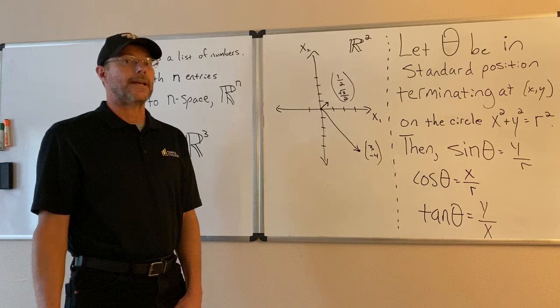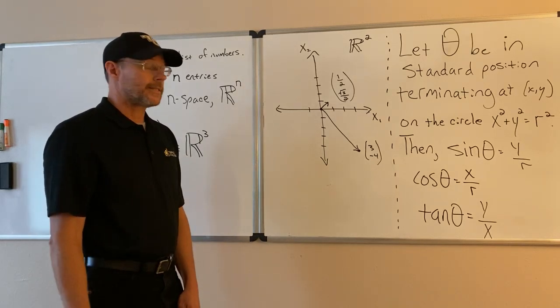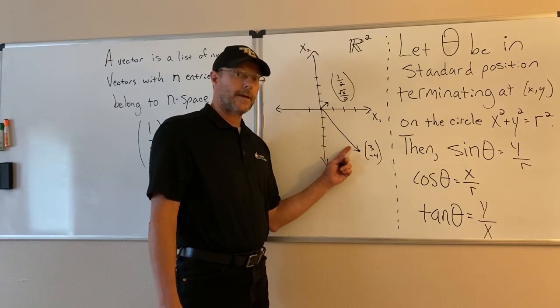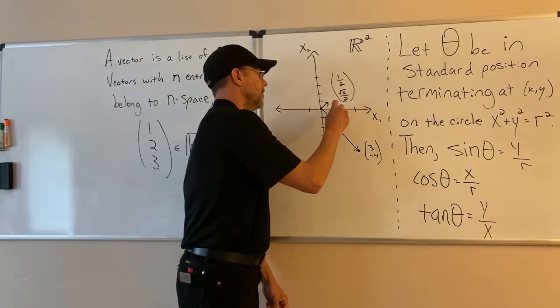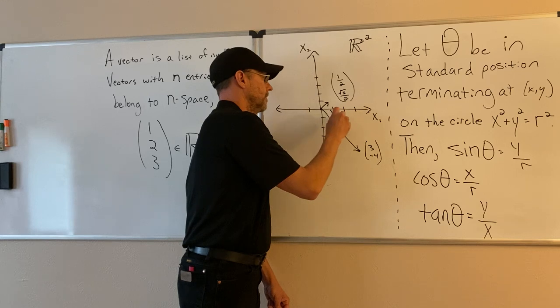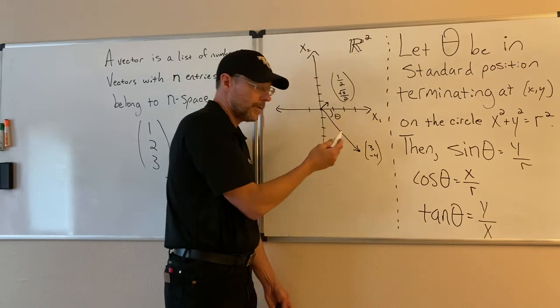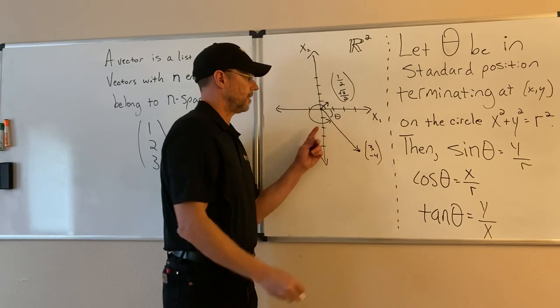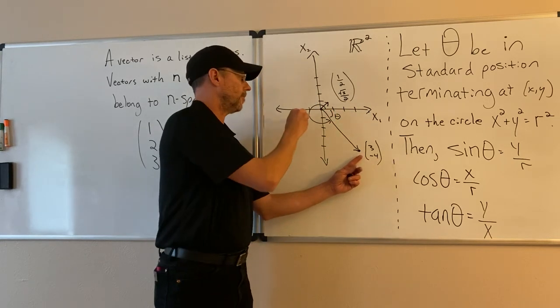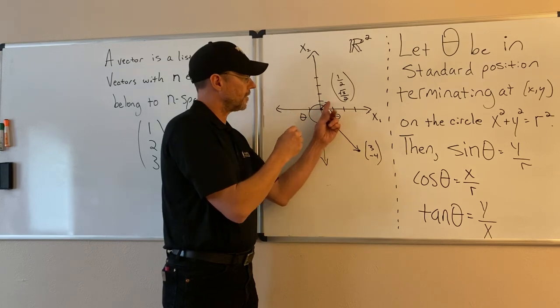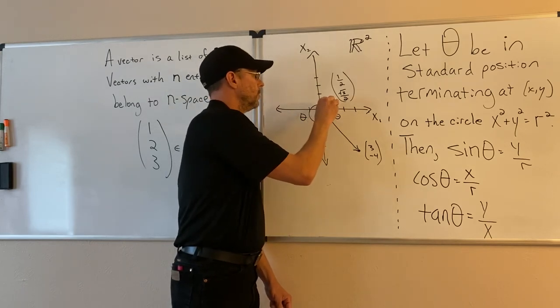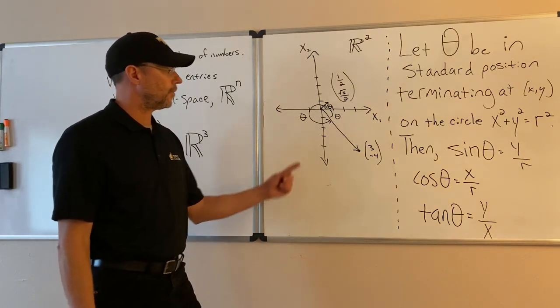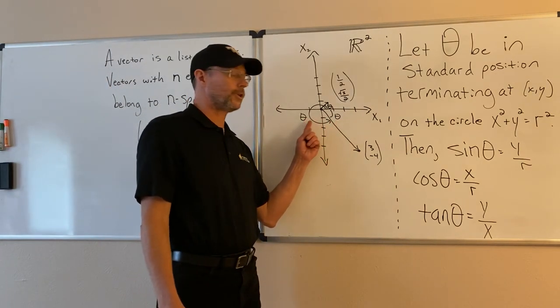Direction is the angle in standard position where the magnitude is used as the terminal side. So this is the direction. Or that's a negative angle. Or this is the direction for three negative four. And for this little vector here, this angle would be the direction. So obviously we can represent the direction multiple ways.